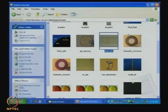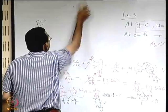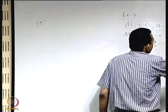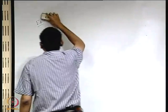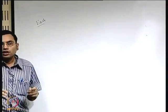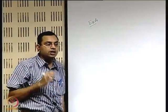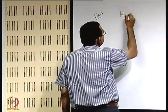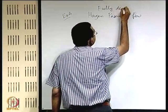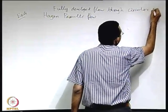Now let us move to example 4, which uses a different coordinate system driven by the geometry of the flow: fully developed flow through circular pipes, known as Hagen-Poiseuille flow. This is very important from engineering applications. We will use the cylindrical polar coordinate system with r as the radial coordinate, theta as the angular coordinate, and z as the axial coordinate.